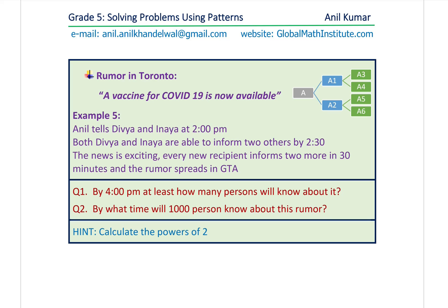Here is a brilliant question from one of our lessons. It is for Grade 5 students for solving problems using patterns. The question we were discussing was about a rumor. The rumor goes like this: a vaccine for COVID-19 is now available. This is known only to Anil Kumar, and during his class at two, he is going to disclose it to only two students. Anil tells Divya and Inaya at 2 p.m. Both Divya and Inaya are able to inform two others by 2:30. The news is exciting.